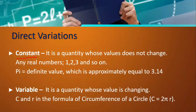Then we have the variable — the quantity whose value is changing. In the formula for the circumference of a circle, C = 2πR, C and R are our variables, while 2π is our constant.